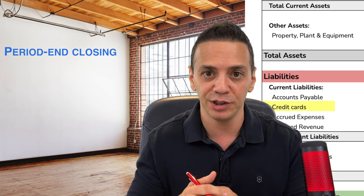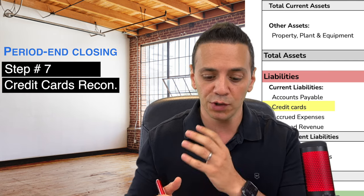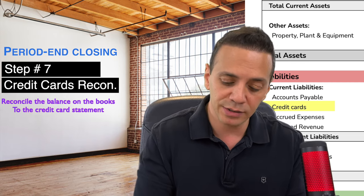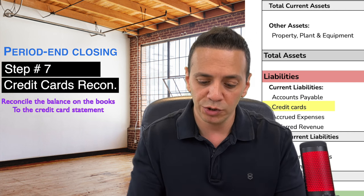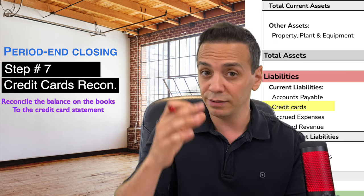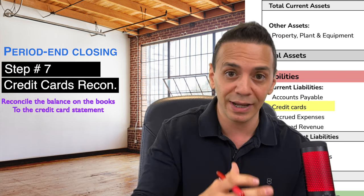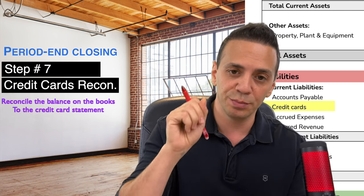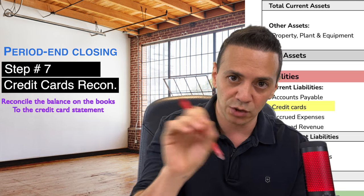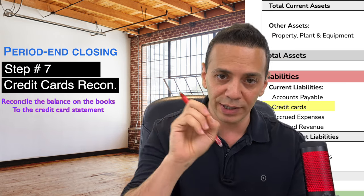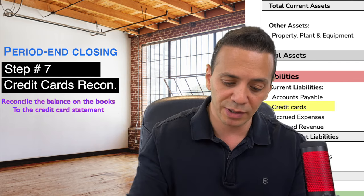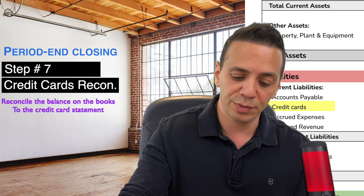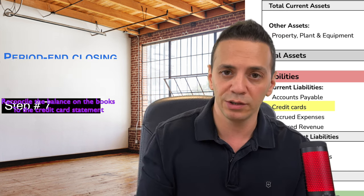Number seven is credit cards. Just like bank statements, we're concerned with completeness. Reconcile the balance on your books to the credit card statement at month-end. Often you'll have a bank feed — CSV upload or API feed — into your accounting software. Review each line item to make sure the expense is allocated to the correct expense account. Make sure you have a complete listing of all credit cards being used around the company and reconcile them monthly.